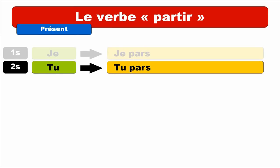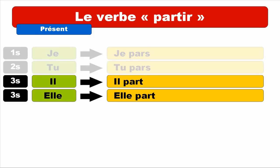It's the same form as you noticed — it ends with an S but we don't pronounce it. And then IL, ELLE. IL PART. Repeat. IL PART. And then ELLE. ELLE PART. Repeat. ELLE PART.